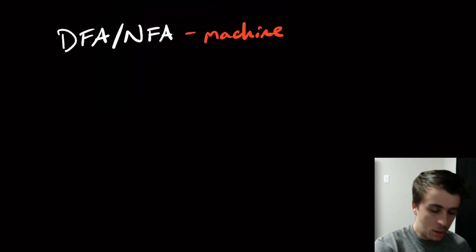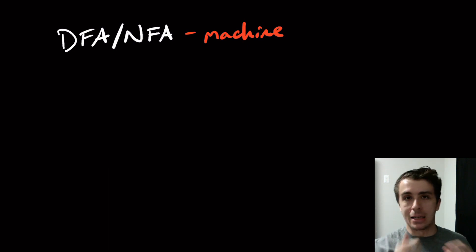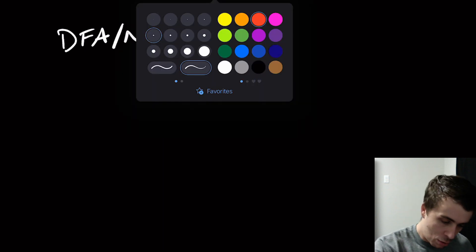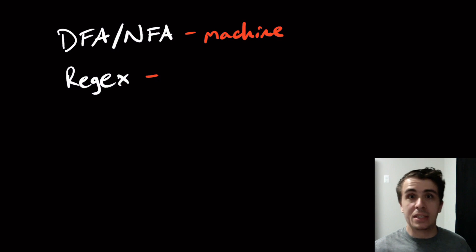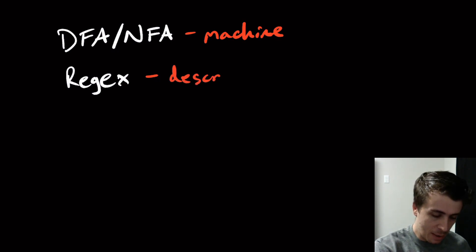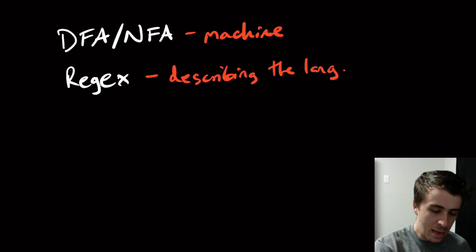Hi, welcome to another edition of Easy Theory. We're going to continue with a new section of theory, but before we do that I want to bridge the gap. What we've been talking about are several things related to regular languages — namely DFAs and NFAs. These are a state-based machine model where you feed an input in, observe what happens, and whatever state you end in, you either accept the input or not. We also had something called a regular expression — a regex.